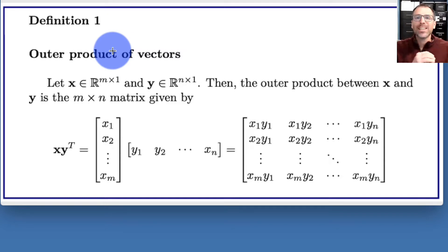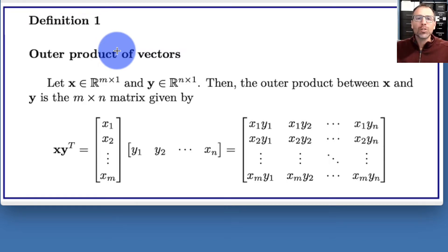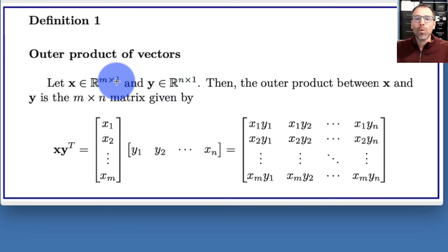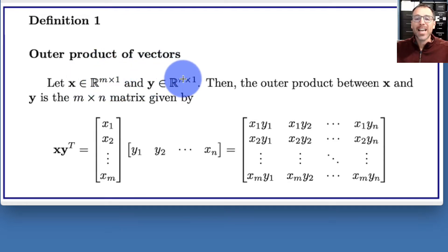Let's code up an algorithm to take the outer product between two vectors. Let's start with the formal mathematical definition. We say that the outer product of two vectors begins by letting x be an element of R-m-by-one and y be an element of R-n-by-one. Both are column vectors: x has m rows, y has n rows.